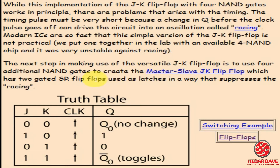If the clock pulse is too short, a race around condition will occur where the circuit competes with itself. To work in a particular range and avoid this, we call this the JK flip-flop. The next step in making use of the versatile JK flip-flop is to use additional NAND gates to create the master-slave JK flip-flop, which has two gated SR flip-flops used as latches in a way that suppresses racing.